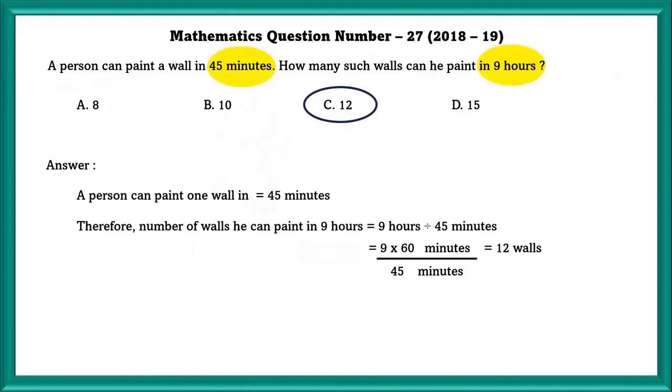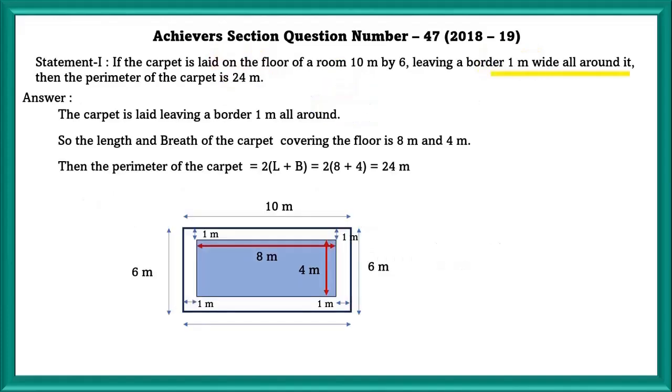Here, a person can paint a wall in 45 minutes. How many walls such can he paint in 9 hours? They have given in 45 minutes but they are asking for 9 hours. So in order to do this, you have to divide, but dividing you should make sure that all these are in the same unit, because in order to divide, multiply, add, or subtract, everything must be in the same units.